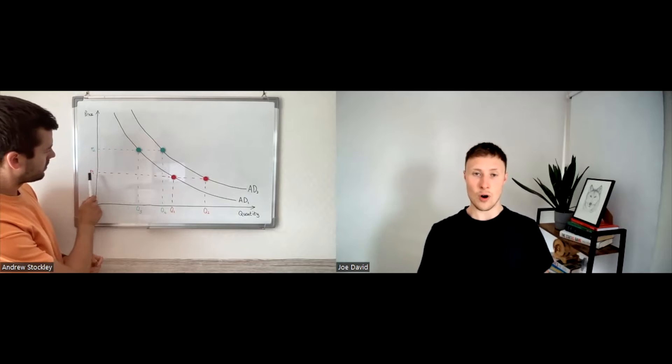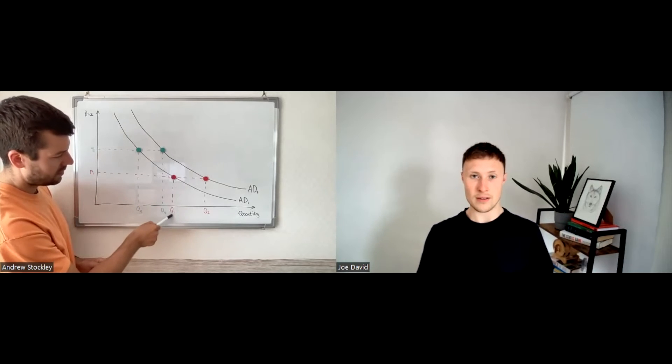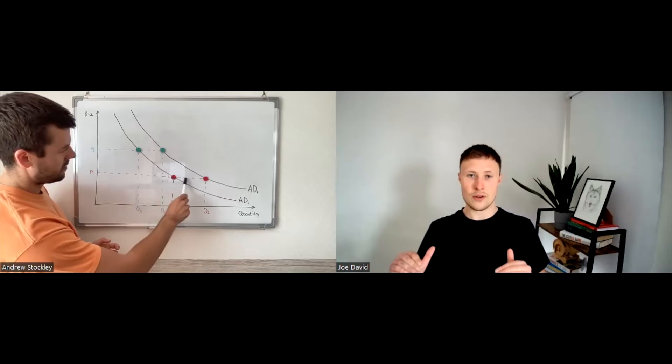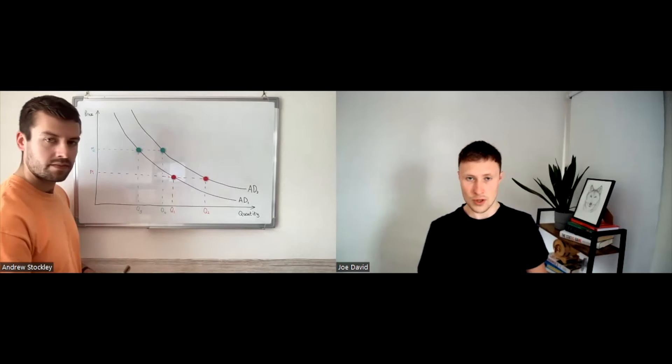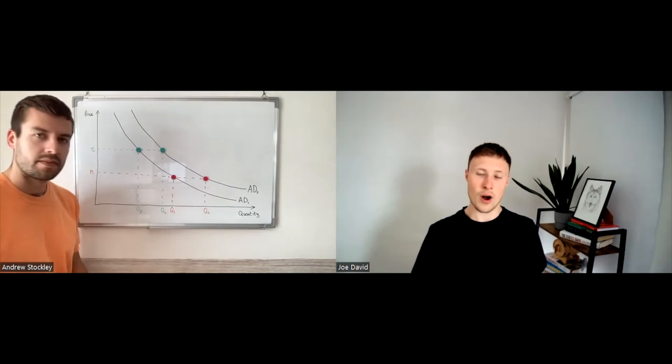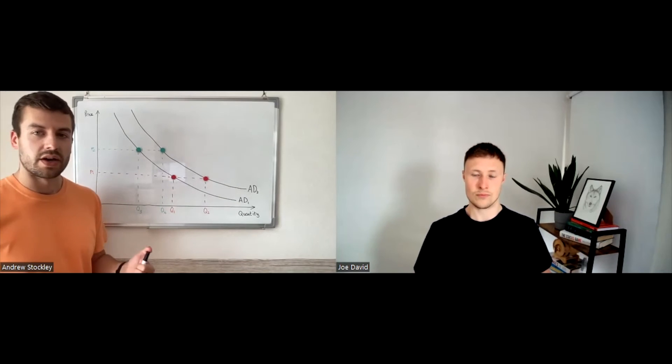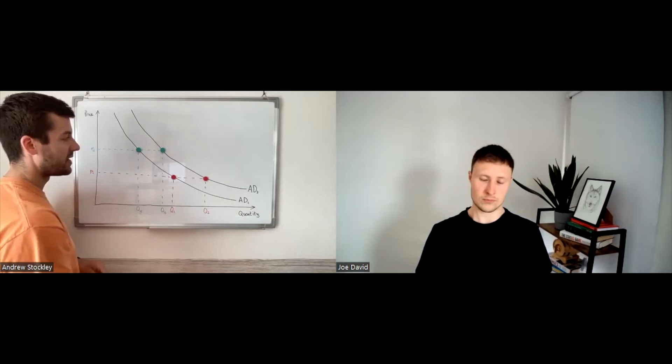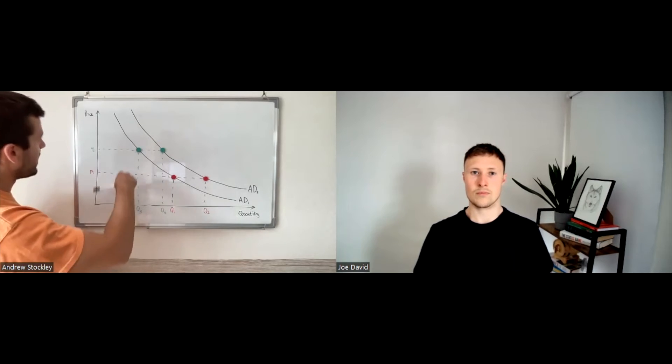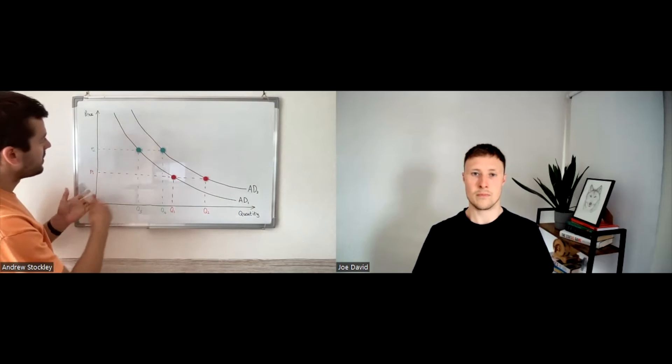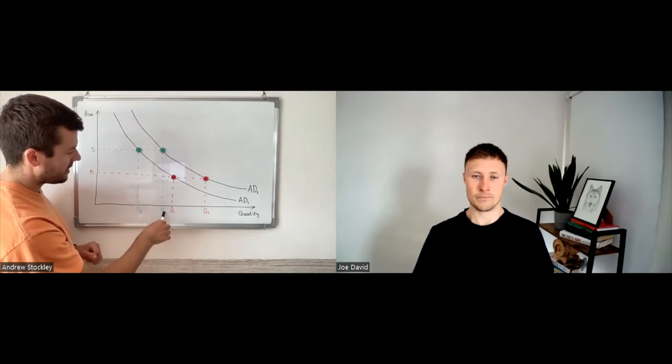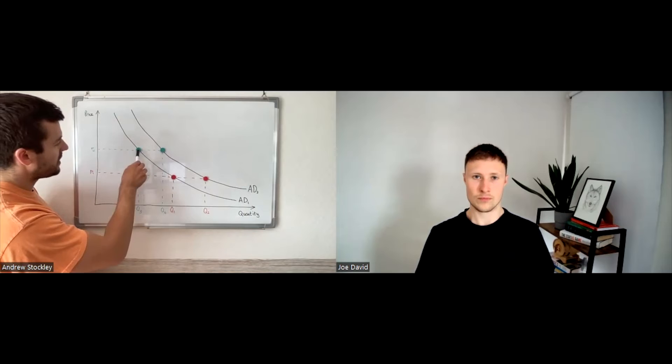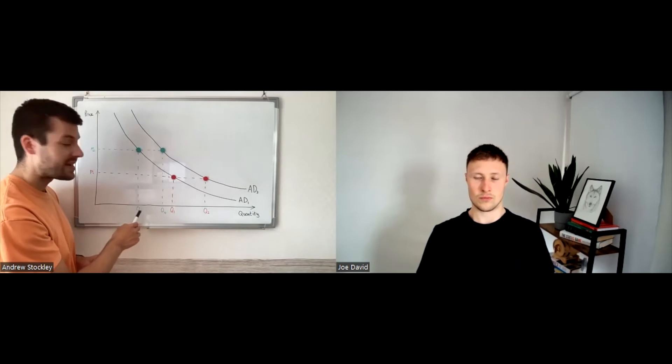So let's look at the price P1. So P1 on AD1 is at Q1, that's quantity demanded. Now, because of the rightward shift, the price level, the same price level P1, if you go along as Andrew's done on the graph, you'll get to quantity 2. So quantity's increased. However, the price has remained the same. And the same occurs if there's a leftward shift in the aggregate demand curve. So if we imagine it went from AD2 back to AD1, let's take another price level, as this applies to any price level on the graph. If you went from P2, we would have a quantity demanded of Q4. And if you shifted leftwards, we'd now at the same price level of P2 have a lower quantity demanded of Q3.